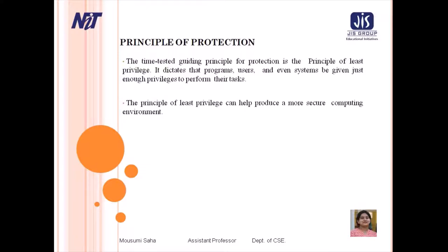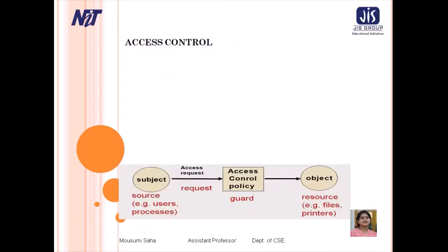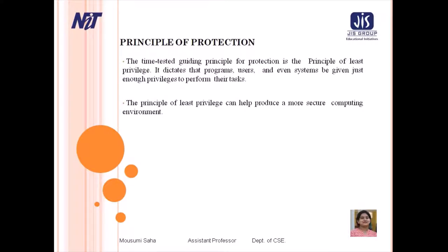An operating system following the principle of least privilege implements features including programs, system calls, and data structures so that the failure or compromise of a system component causes minimum damage. For example, it should not allow the execution of code from the process stack that would enable a remote user to gain maximum privilege and access to the entire system. Such an operating system also provides system calls and services that allow applications to be written with fine-grained access control.